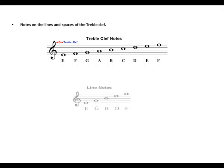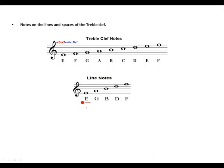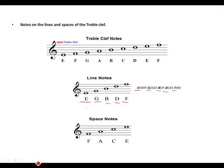Notes on the lines and spaces of the treble clef. The first line is E, second line is G, third line is B, fourth line is D, and the last line is F. We use the phrase 'Every Good Boy Does Fine' — E for Every, G for Good, B for Boy, D for Does, F for Fine. For the spaces: first space is F, second is A, third is C, fourth is E. We use the word FACE to help remember the spaces for the treble clef.